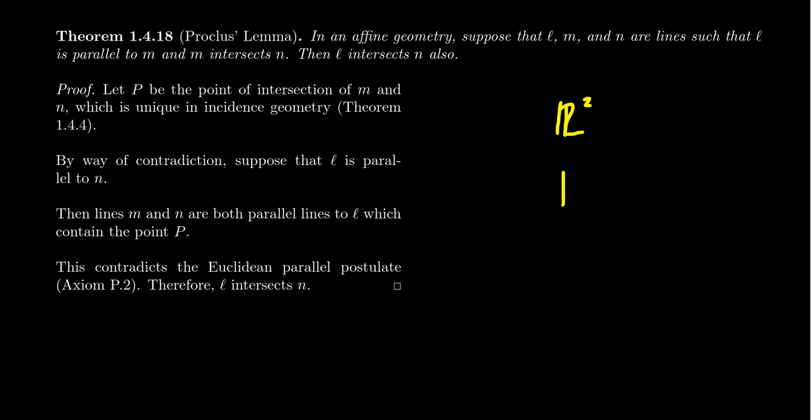If you take any field — which, for those who might not have the abstract algebra background, is a collection of numbers for which we can add, subtract, multiply, and divide, and those operations follow the usual rules such as associativity, commutativity, distributive laws, with identities and inverses — you can make an affine plane with it.